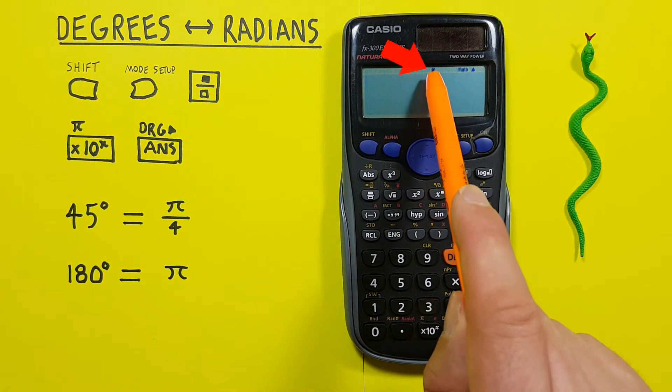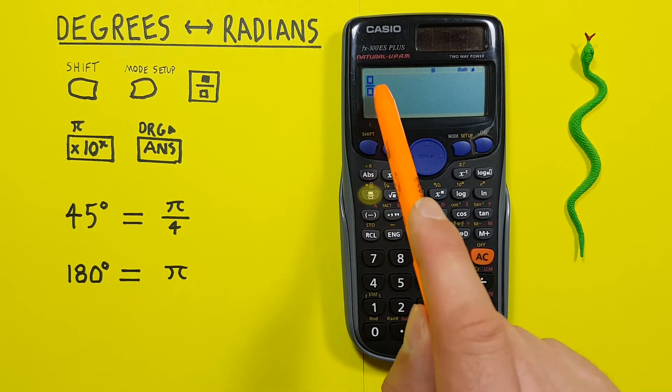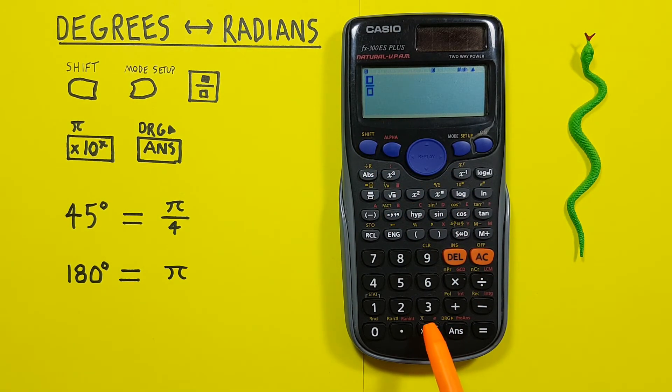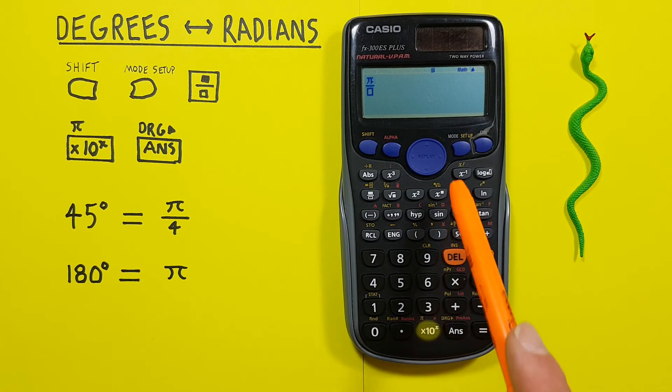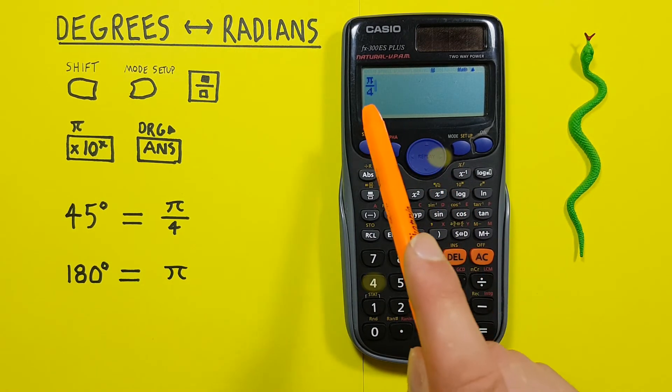We see a D at the top of our screen, so we know we're in degrees mode. Now we can enter our pi over 4. So we'll use the fractions, there we go. And then to enter pi, we can press Shift, and then this times 10 to the x with the Shift function of pi. Scroll down, enter 4, there we go.